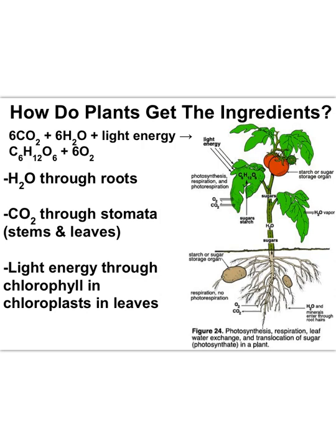The main focus of this video is what specialized structures plants have to get in the reactants of photosynthesis. Plants get water in through their roots, carbon dioxide through structures called stomata in plant leaves and to a lesser extent in their stems, and plants have chlorophyll to absorb light's energy.